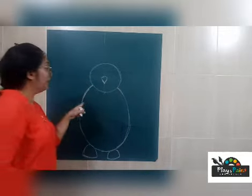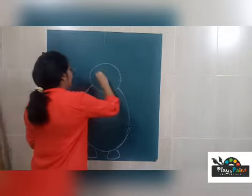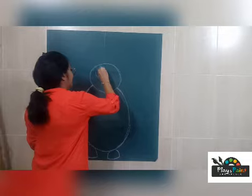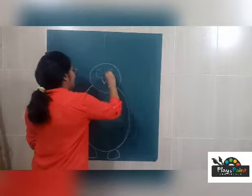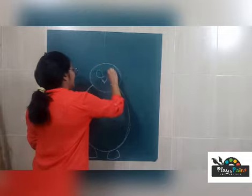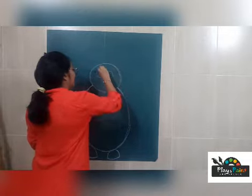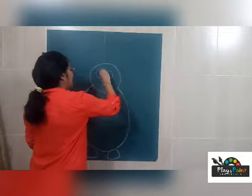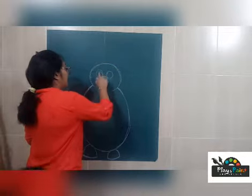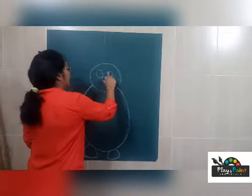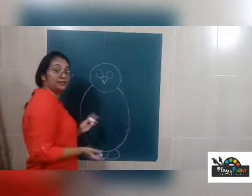And then the eyes. Draw circles — circle and circle — two circles for the eyes. Then I'm going to draw the eyeballs inside those circles.